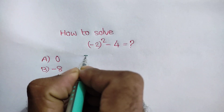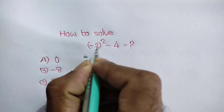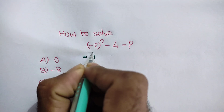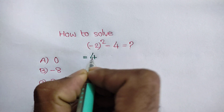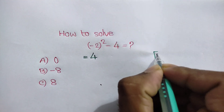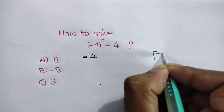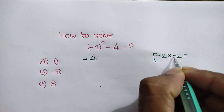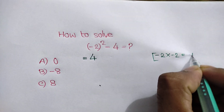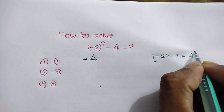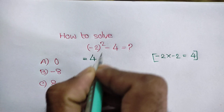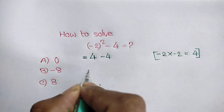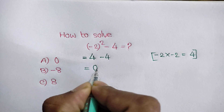So, we can write minus 2 bracket squared is 4, because minus 2 times minus 2 is equal to — minus minus plus — 2 times 2 is equal to 4. So we can write 4 minus 4 is equal to 0.